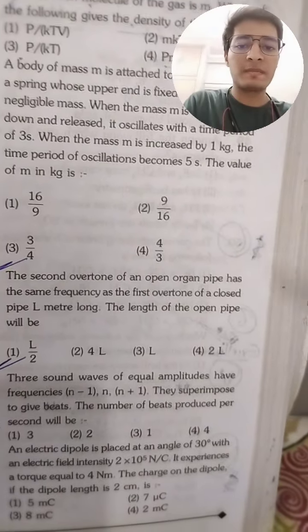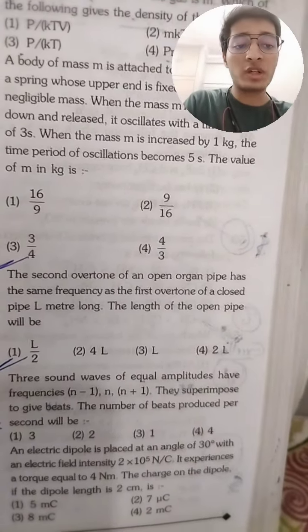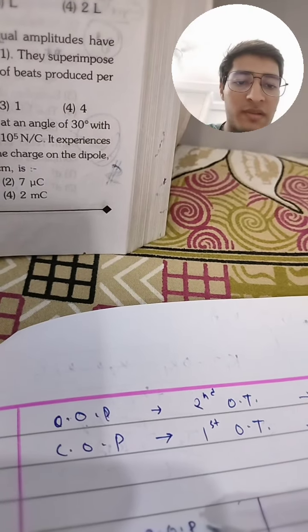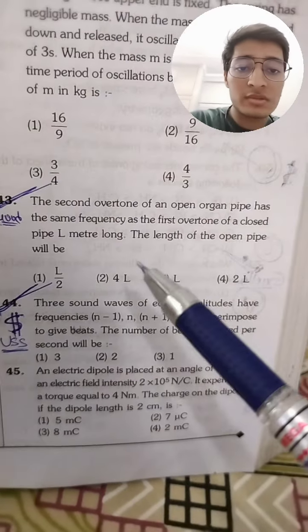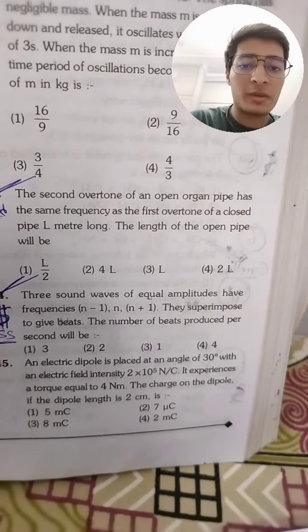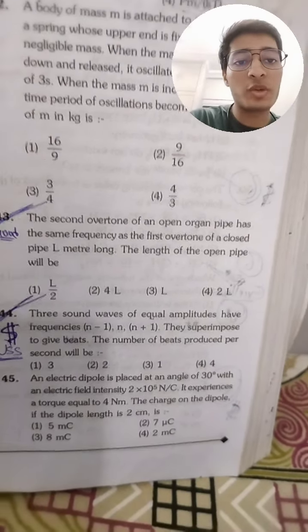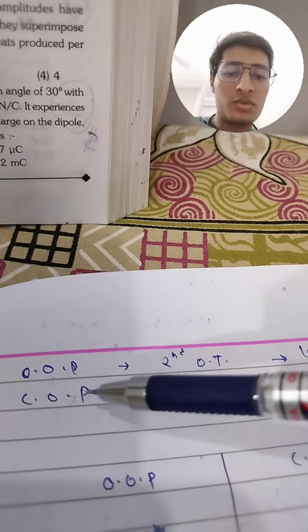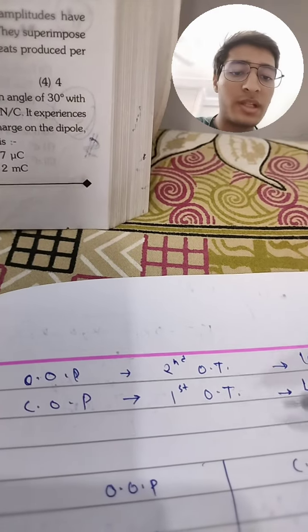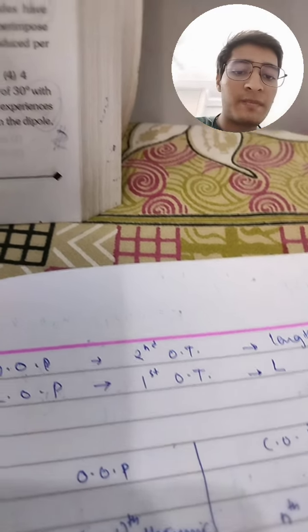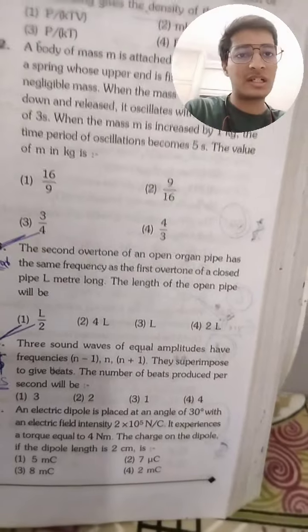Let's start the question. Open organ pipe second overtone — so I have written: open organ pipe second overtone, closed organ pipe first overtone — as given in the question. The length of the closed organ pipe is L meters, and we need to find the length of the open organ pipe.